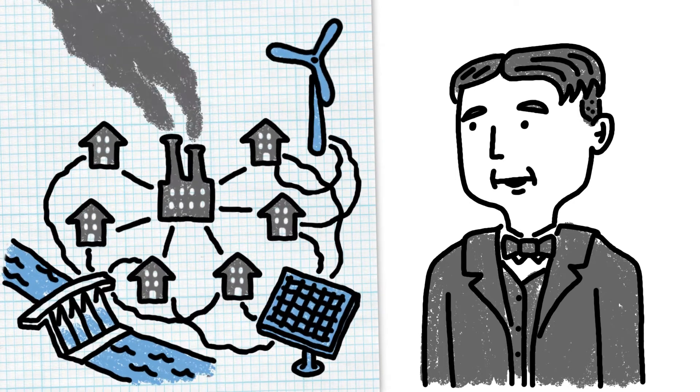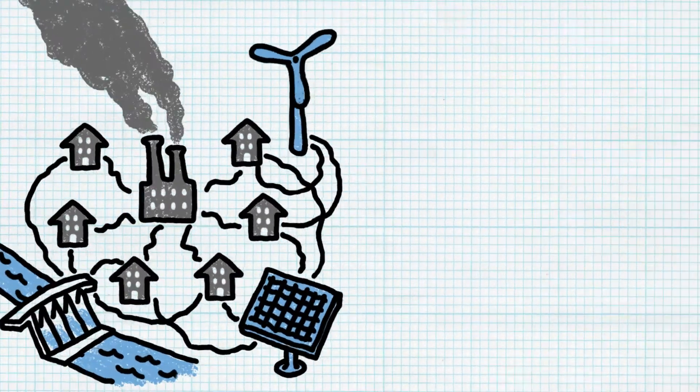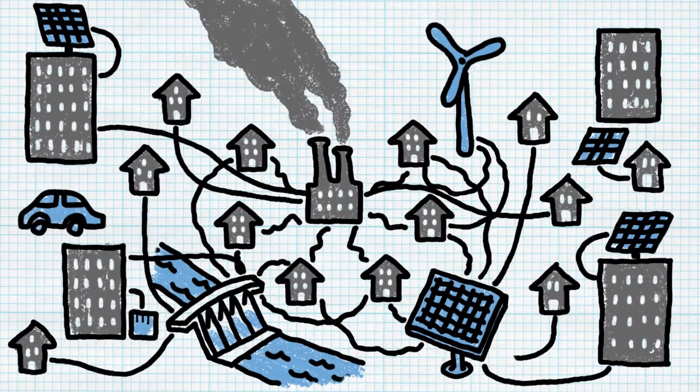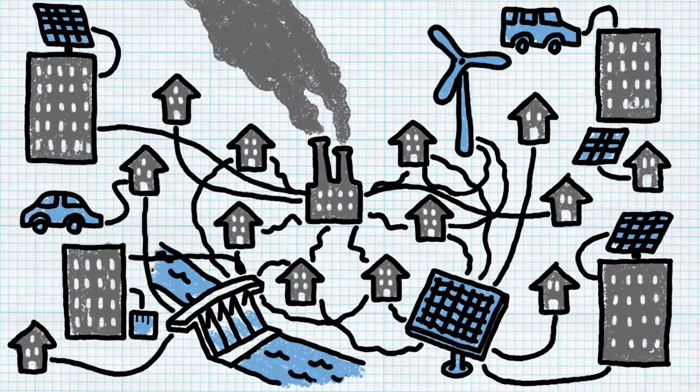The aging infrastructure of the grid today just can't keep up. The old linear model of large centralized power plants is inflexible and unable to predict usage or integrate new sources.